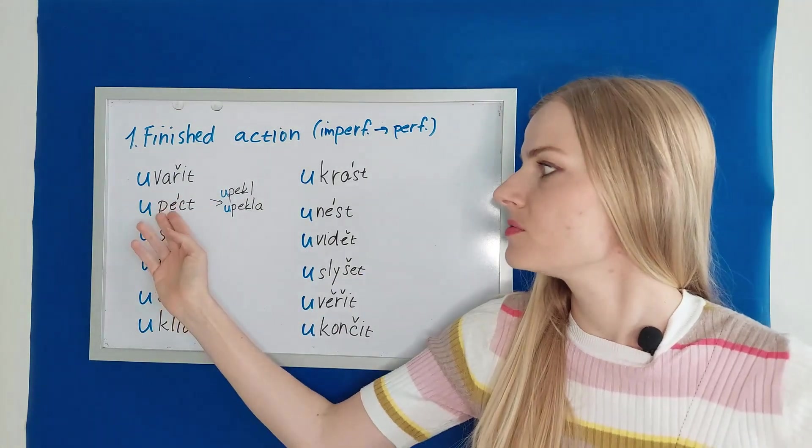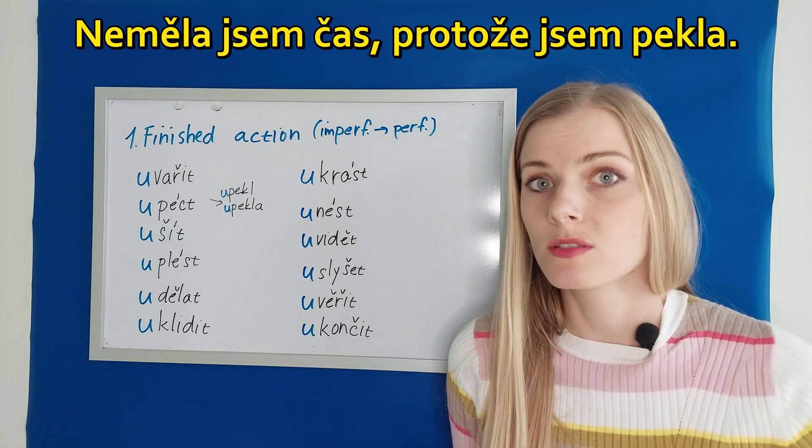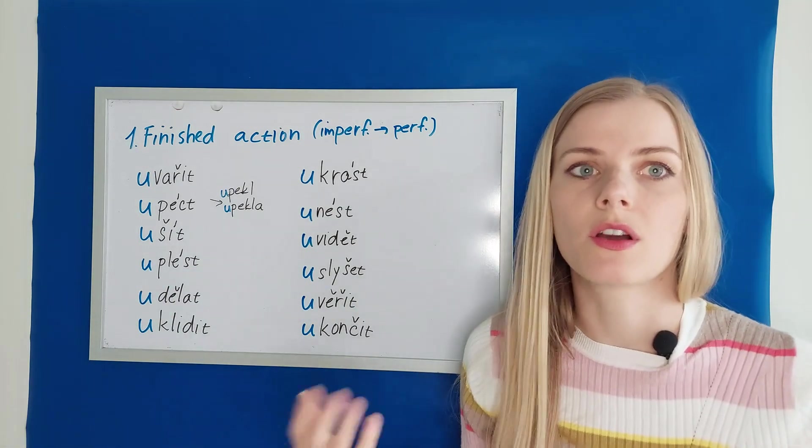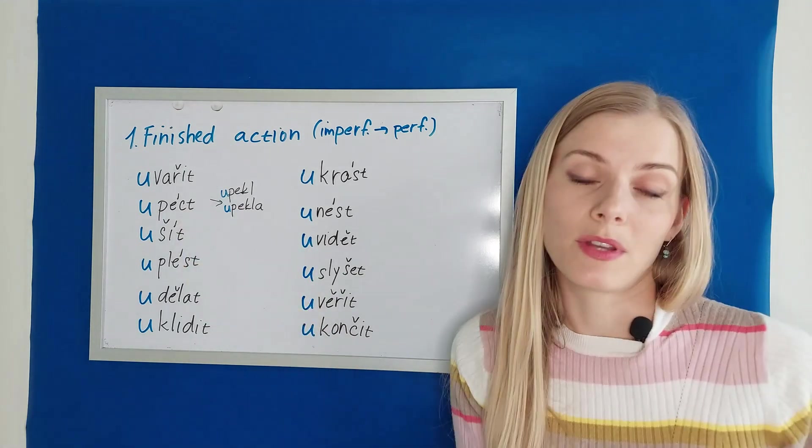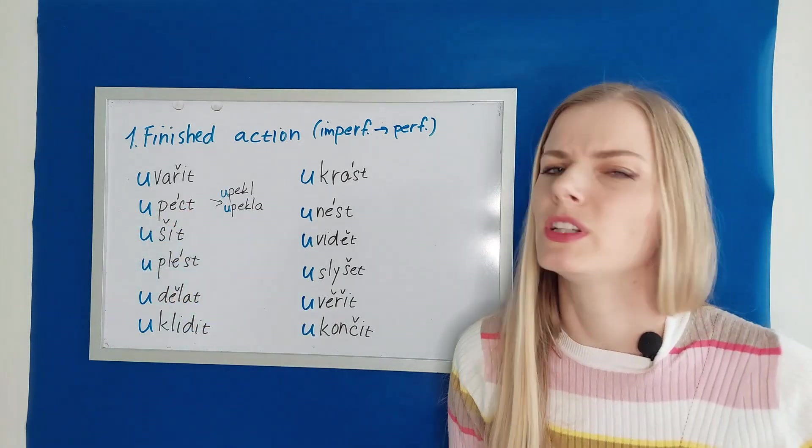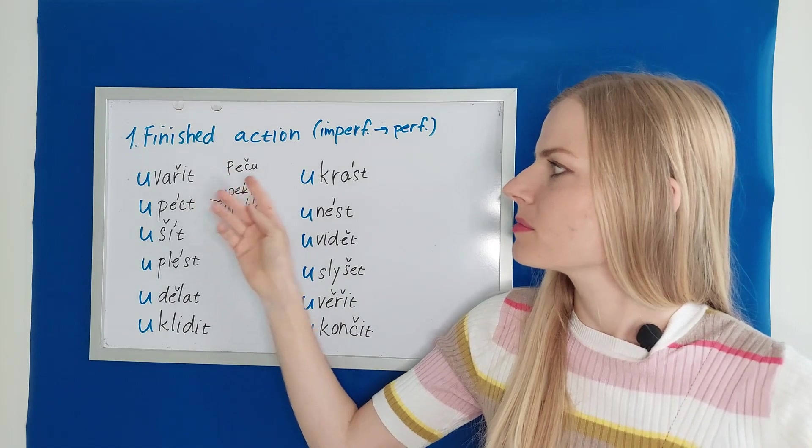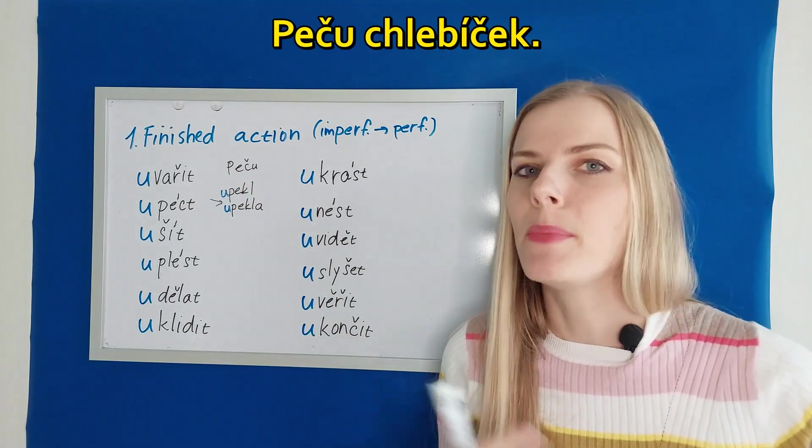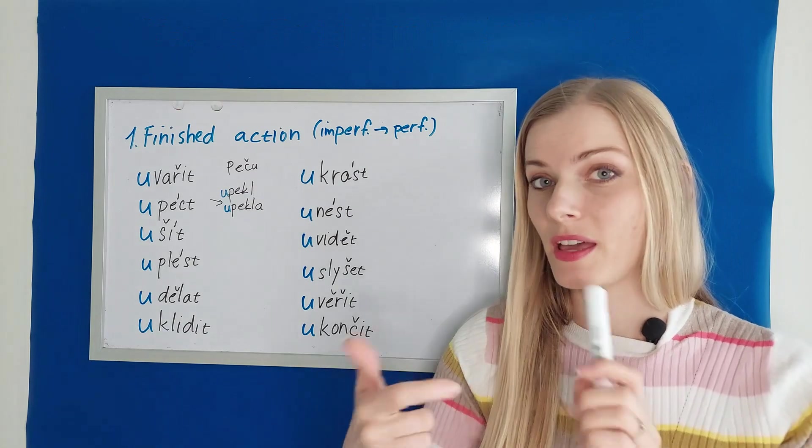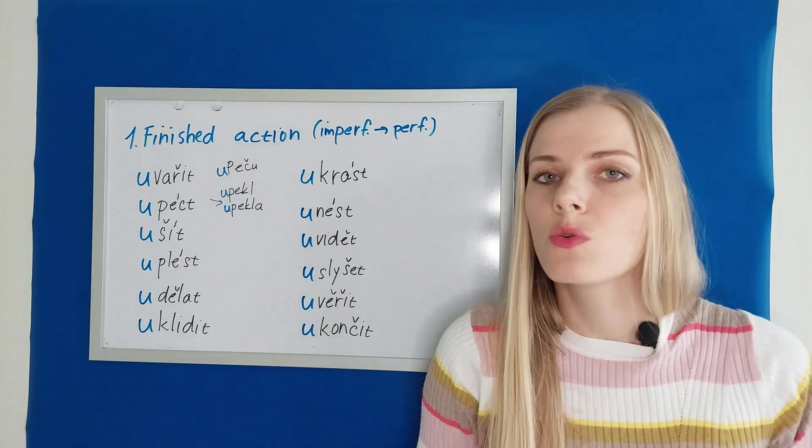If I used the imperfective form in past tense, Pekla jsem banánový chlebíček, I would talk about the circumstance. I didn't have time because I was baking. When I talk about the finished product, Upekla jsem banánový chlebíček. In present tense, it's also irregular, fourth group. Peču pečeš peče. Peču chlebíček. I'm baking the banana bread. Každou neděli peču banánový chlebíček. This would be present simple and continuous. And when I say upeču, upeču means I will bake. There is no way this will be present tense, because it talks about the finished action.